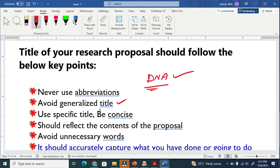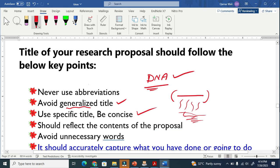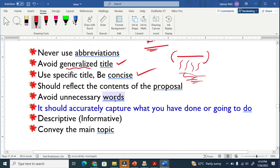Secondly, avoid generalized title. Generalized title I will explain later what generalized means. If you are talking about general things, avoid it. Don't put generalized title. Use specific title and concise title. It should reflect the content of the proposal. This means that when somebody sees your title, they can clearly understand what is going on in the rest of the proposal. This is very good.